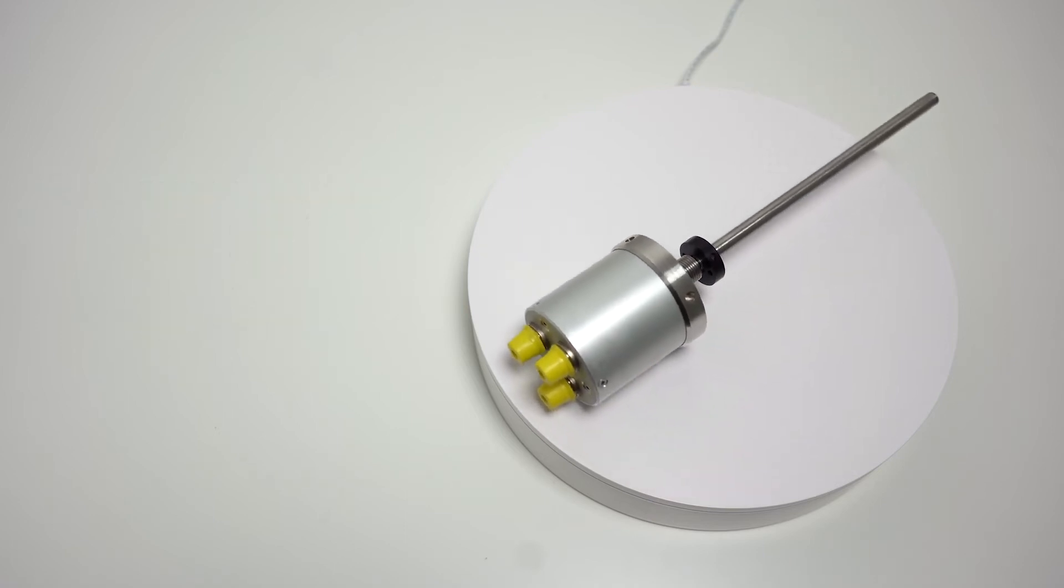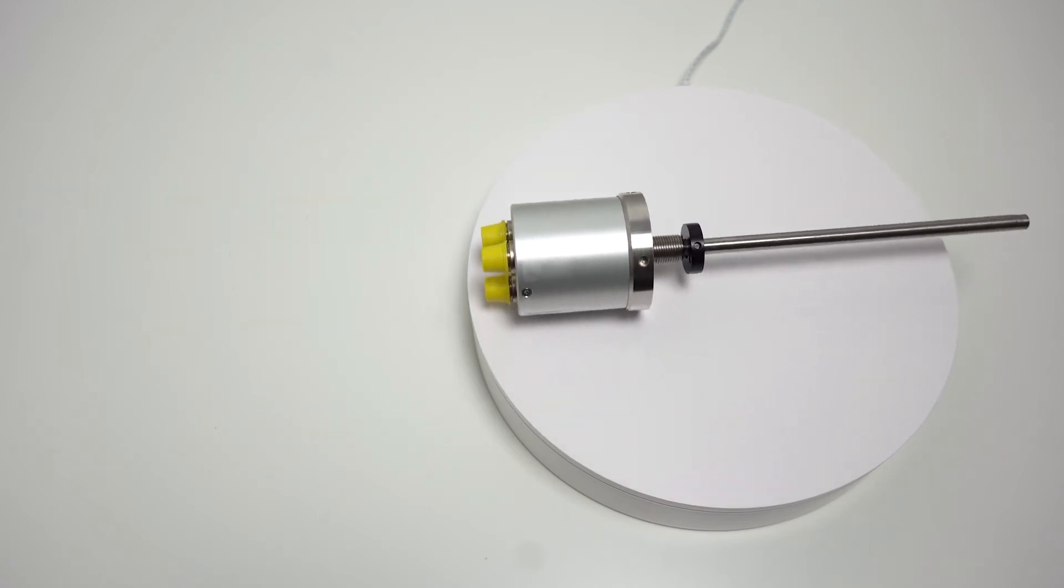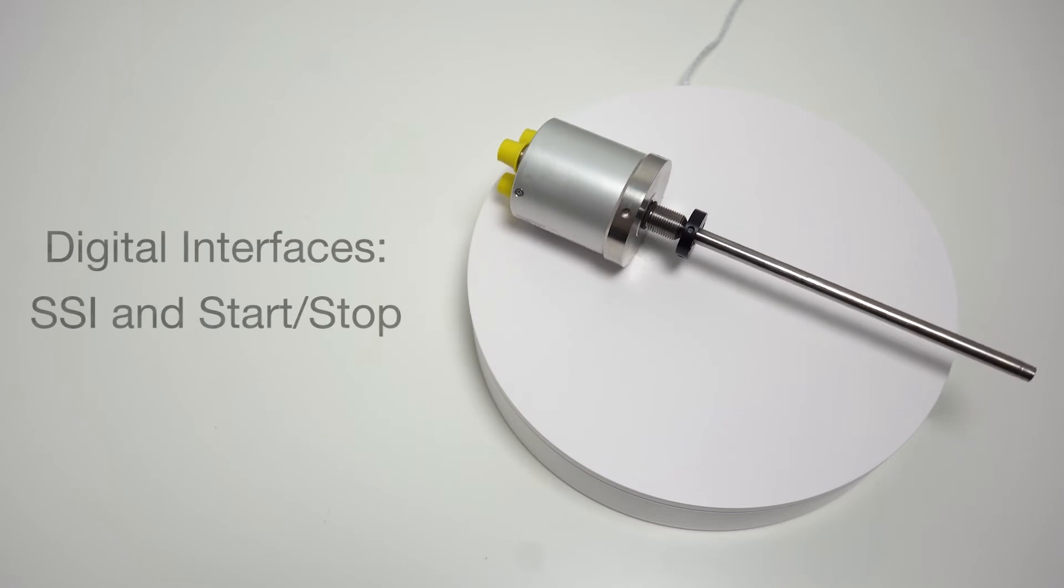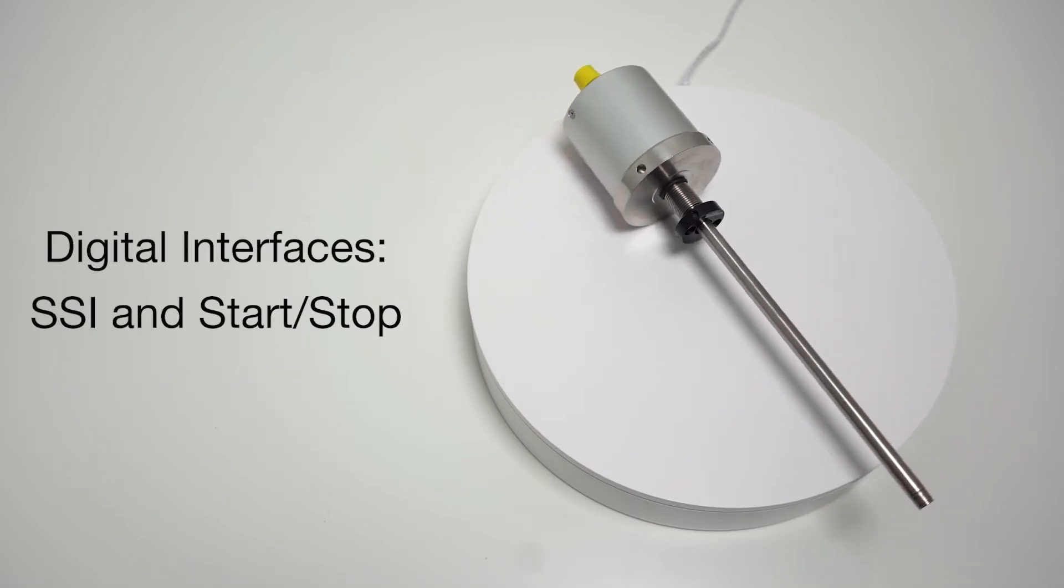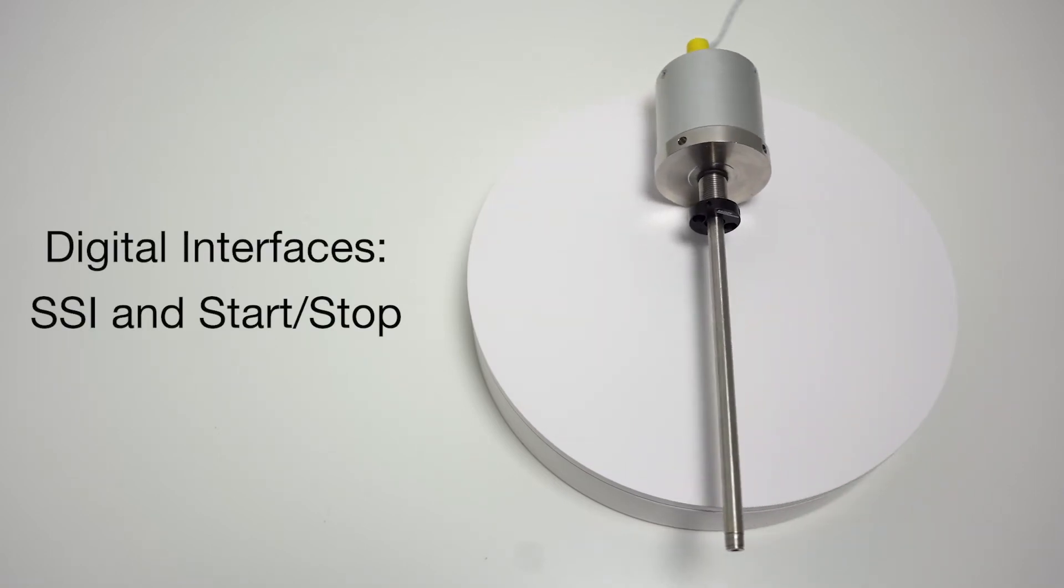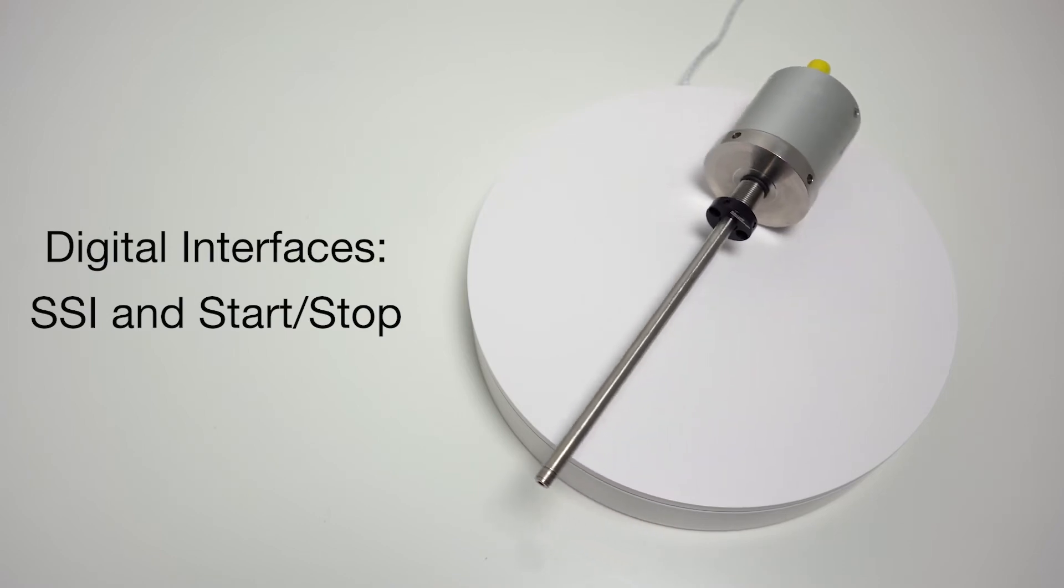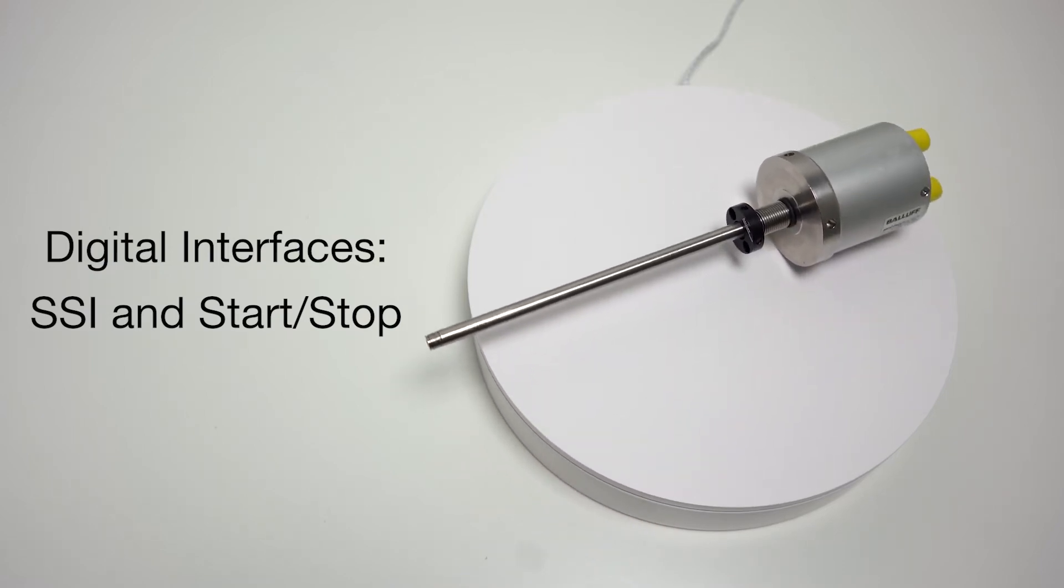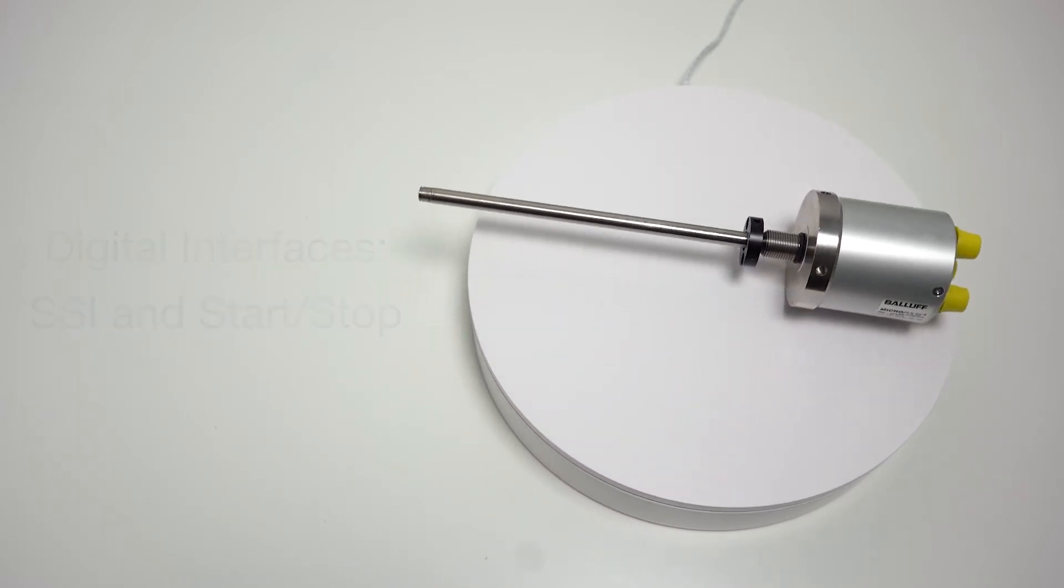Each of these new redundant linear position sensors is available with either SSI or start-stop digital interfaces. Previous versions only provided analog interfaces. While the analog versions have their place in position measurement, they're limited in their capabilities.